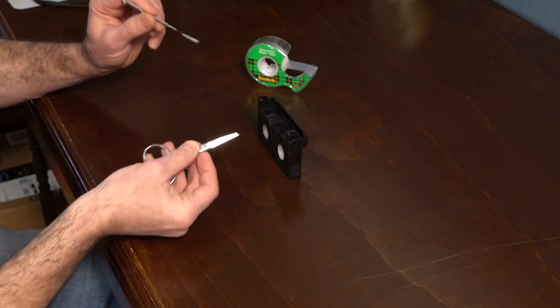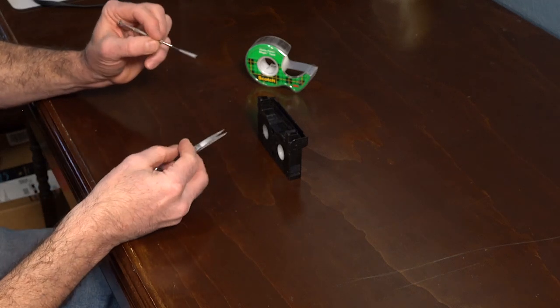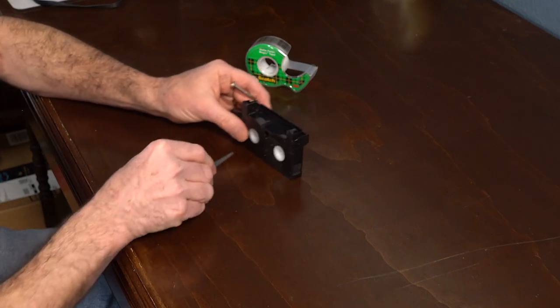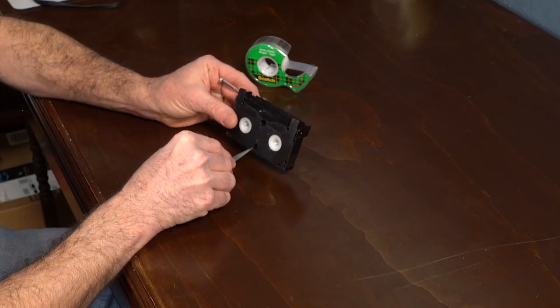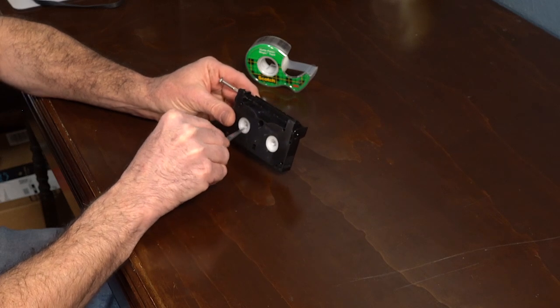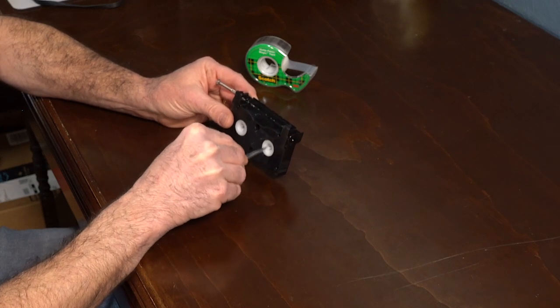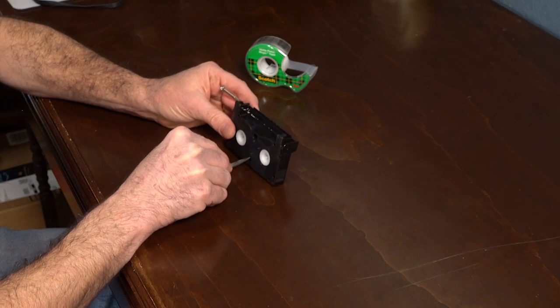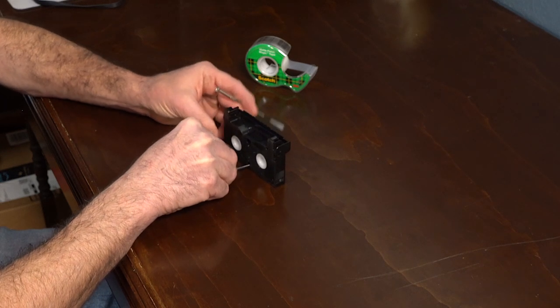And use your mini scissors or another screwdriver to do this part, but here's a switch here. And the switch is much like the VHS tape, which allows these spools to spin. So you're going to hold it down just like that.